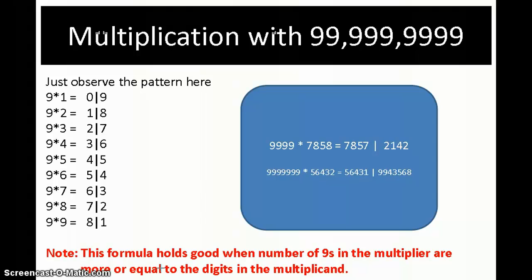this is just by observing the pattern you will find out. Here you see the pattern that we have written is 9 into 9, result is 9, 9 into 2, 18. So what is the pattern here? The pattern is this side of the number is 1 less than this